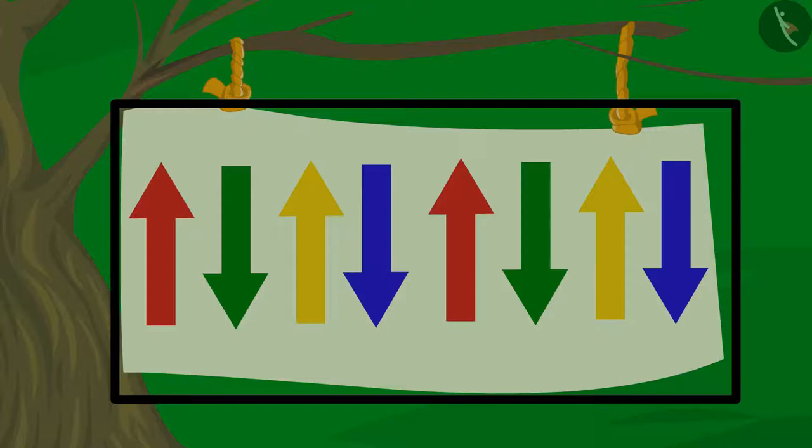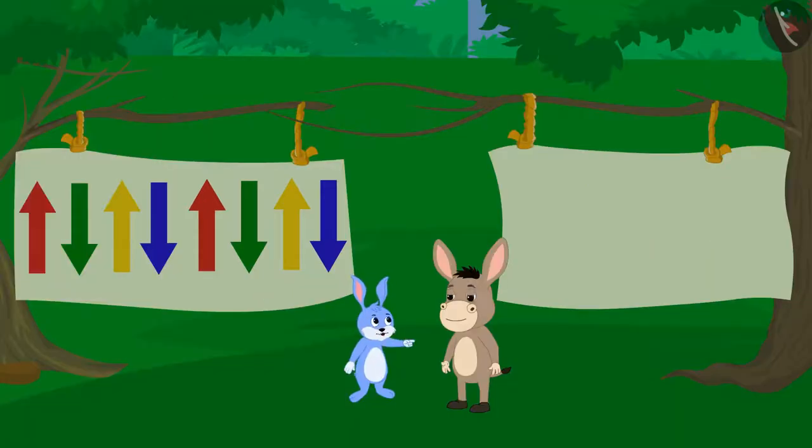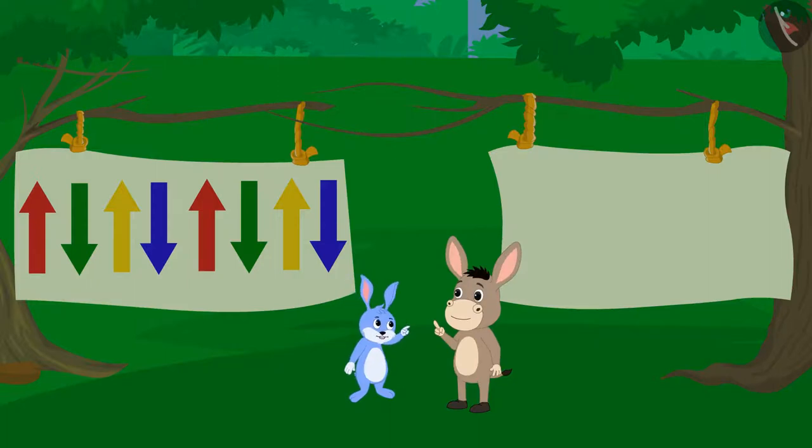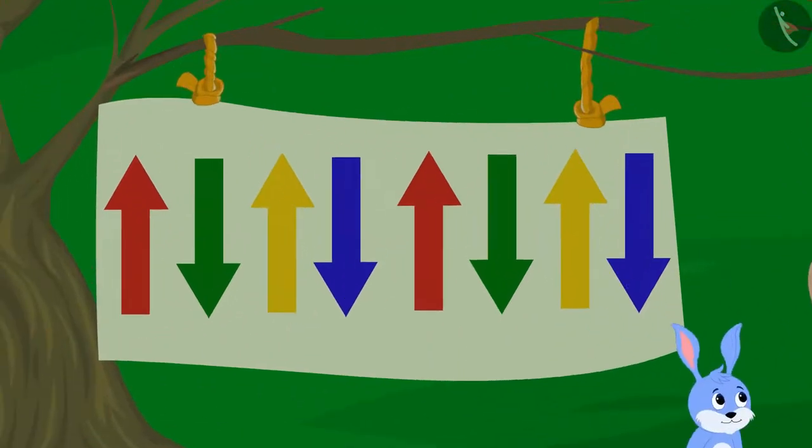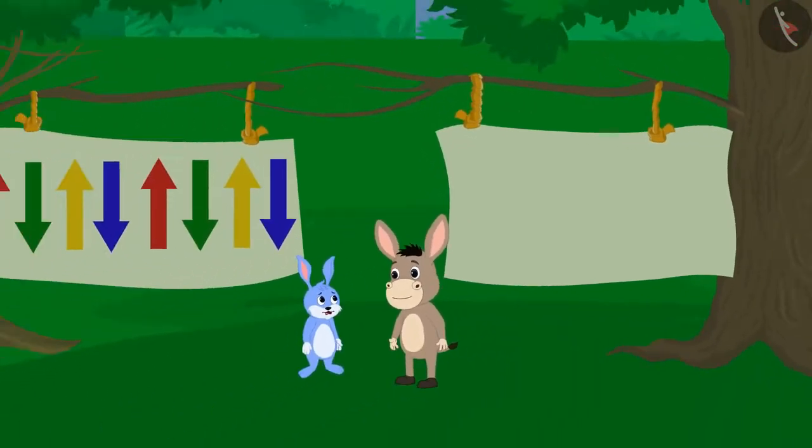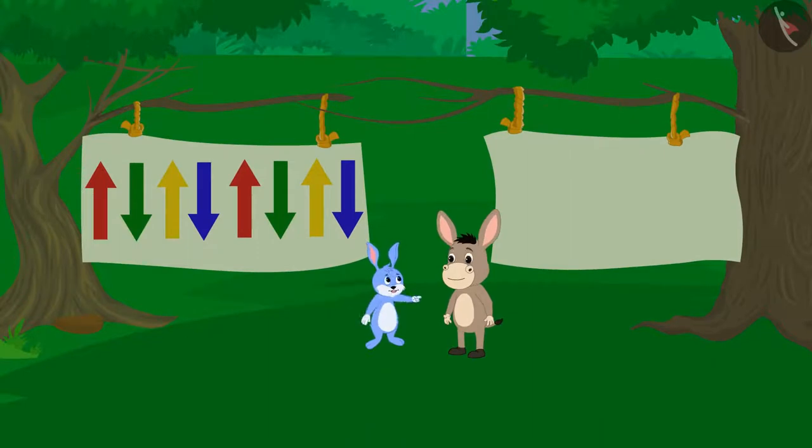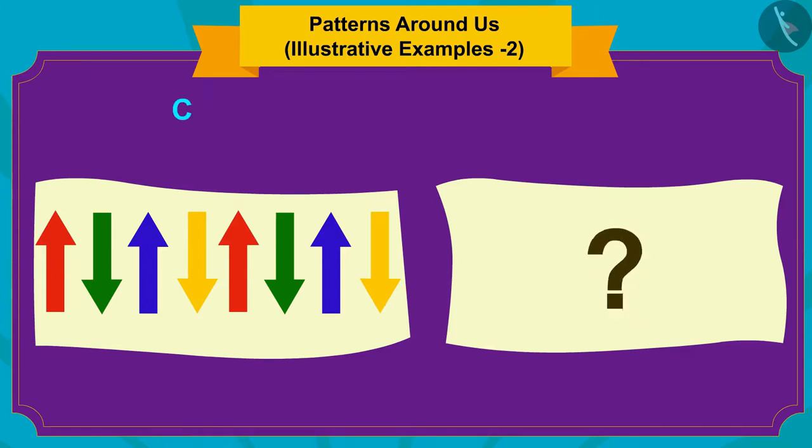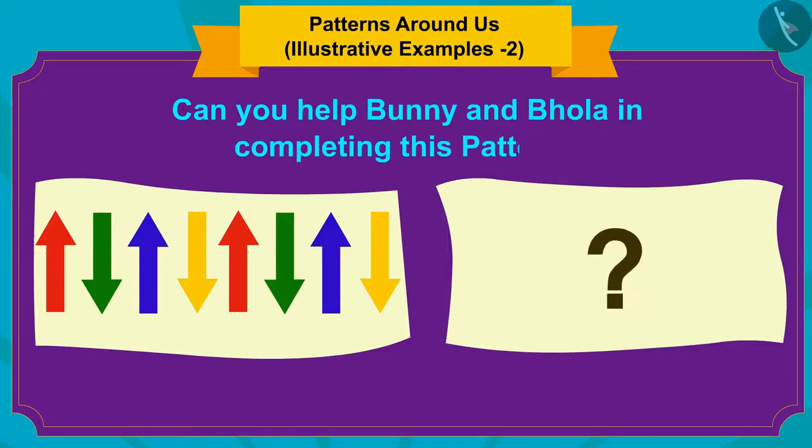This kind of a pattern is made on one part of the curtain. Bola and Bunny thought that if they make that pattern on the other side of the curtain and then pull both the curtains closer, then they will be able to complete that incomplete pattern as well. Children, can you help Bunny and Bola in completing this pattern? Well done, your answer is absolutely correct.